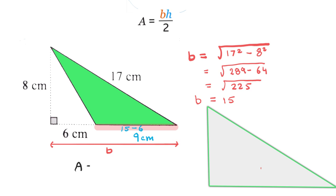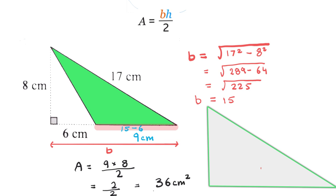Therefore, our area is going to be A equals base, which is 9, times height, which is 8, divided by 2. That is 72 over 2, which makes our area 36 centimeters squared. That's the answer to this problem.